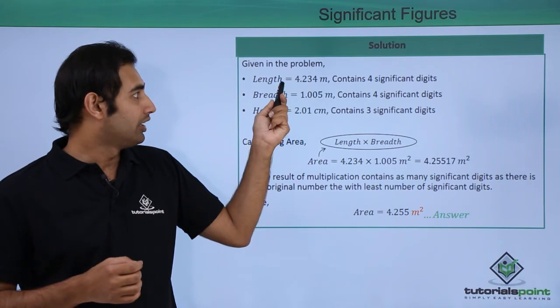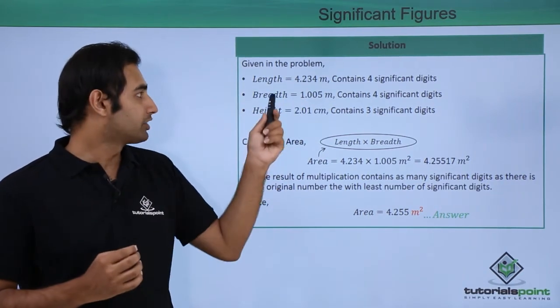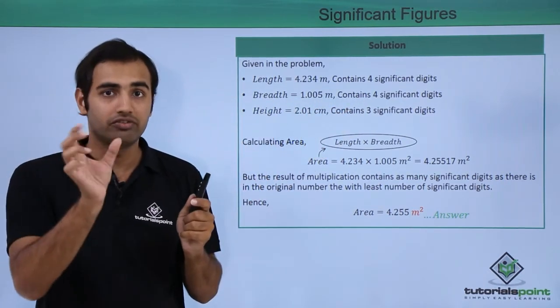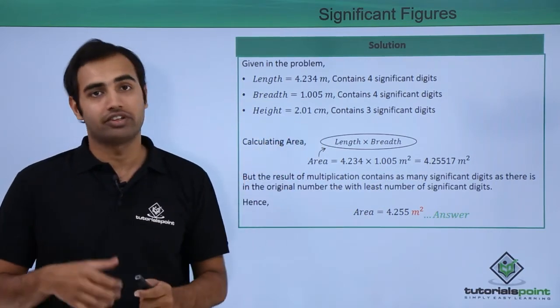Now we can see length has 4 significant figures: 4, 2, 3 and 4, four in number. Next breadth also has 4 significant figures because the zeros which are between the two non-zero numbers are considered significant. Next 2.01 has 3 significant figures.